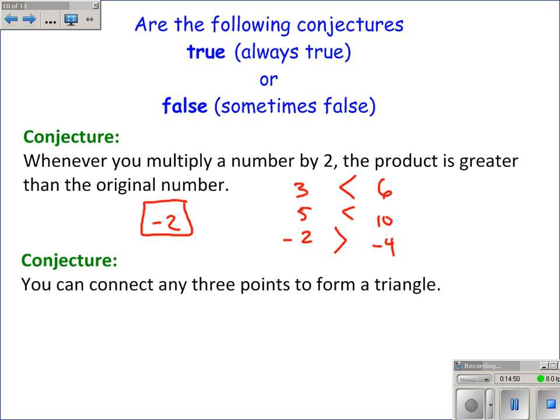Next, you can connect any 3 points to form a triangle. You think, take 3 points, make a triangle, well, that should work, but if the points are actually collinear, they actually don't form a triangle. So this case, where they're collinear, would be a counterexample. So these are both false.